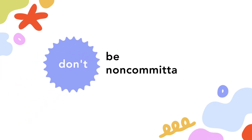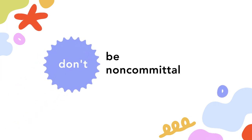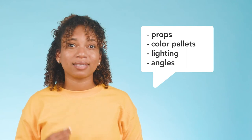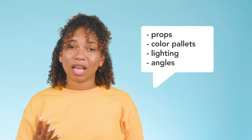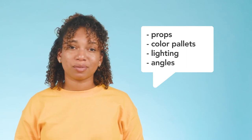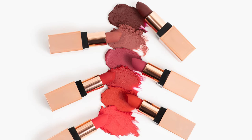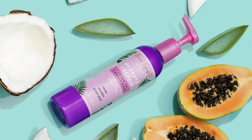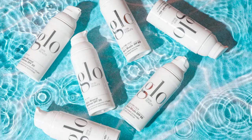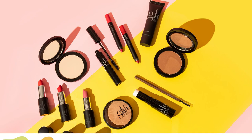Don't be non-committal. Making a photoshoot plan of attack will allow you to commit 100% to your content vision. A well-thought-out plan includes knowing every single detail you want in your shots — like props, color palettes, lighting, shadows, and angles. When you more or less know what shots you're going for, your ability to commit and bring your vision to life will be a piece of cake.